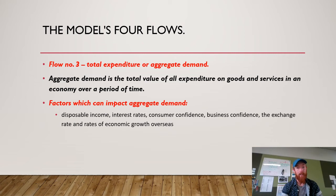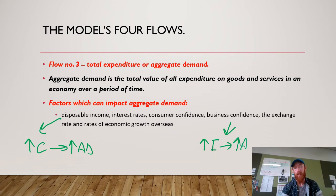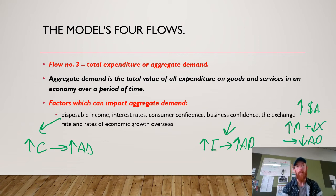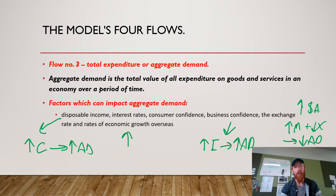For example, if disposable income rises, that will increase private consumption spending and therefore increase aggregate demand. If consumer confidence rises, similarly it will boost spending. If businesses are feeling confident, that will increase private investment spending and therefore increase aggregate demand. With the exchange rate, if it appreciates — if the Australian dollar is worth more — we will import more and export less because our exports become more expensive, decreasing aggregate demand overall. Rates of economic growth overseas have been massive for Australia recently: when China's doing well, our exports tend to increase and therefore aggregate demand increases overall.